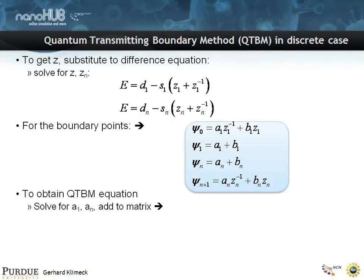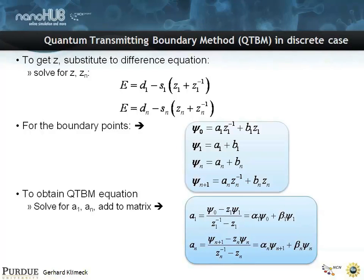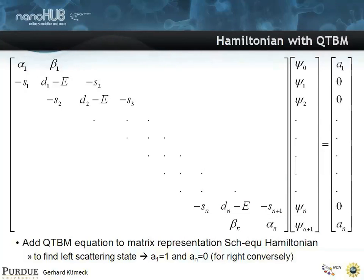Where you have the wave function on side 0 related to the wave function of side 1, with some alphas and betas. And on the right, you do this again with alphas and betas on the right. So you expand your matrix by one element at a time, so you introduce the new wave function 0, that's the boundary condition on the left, and on the right, and they're coupled to the center through these alphas and betas, like this.